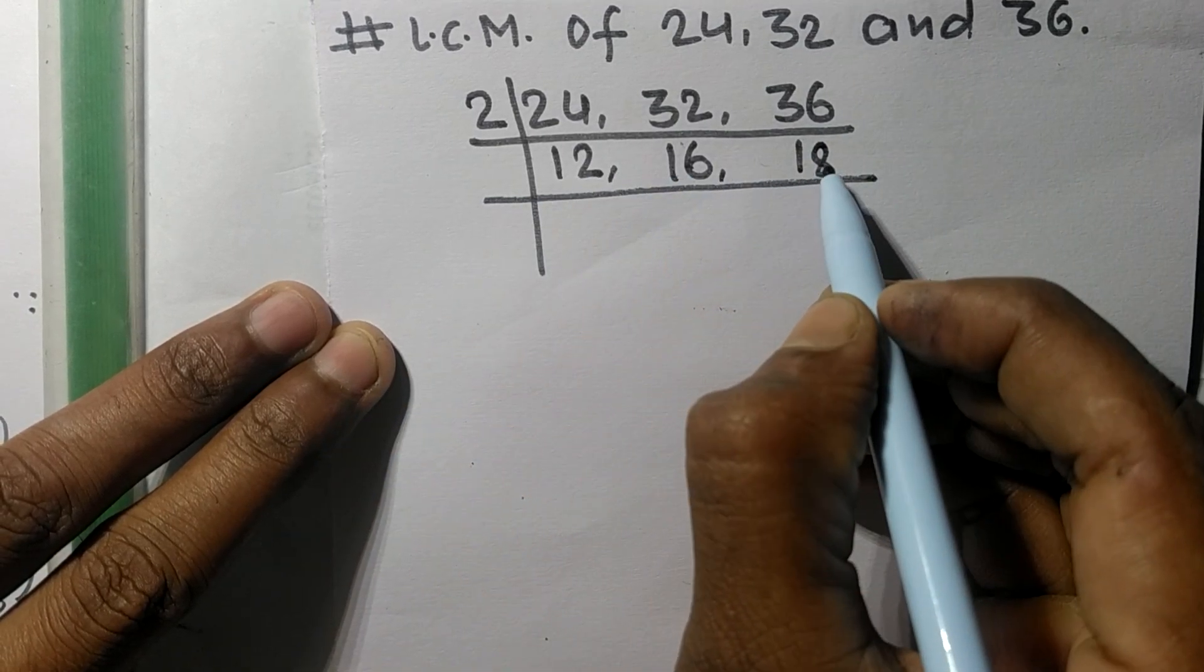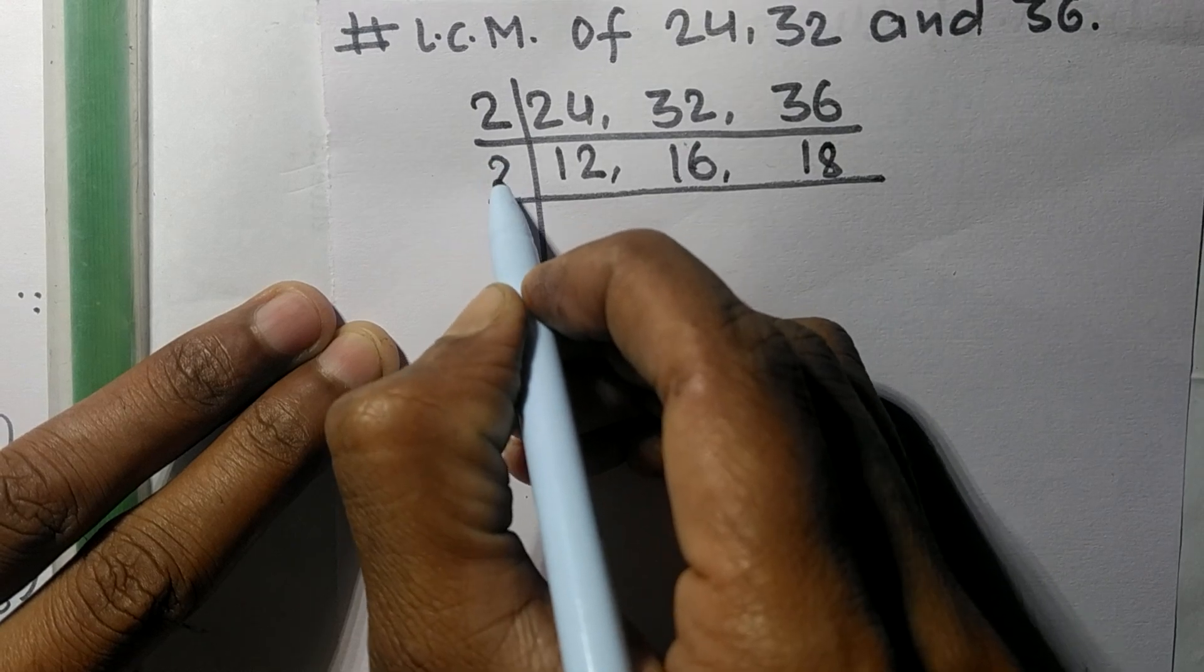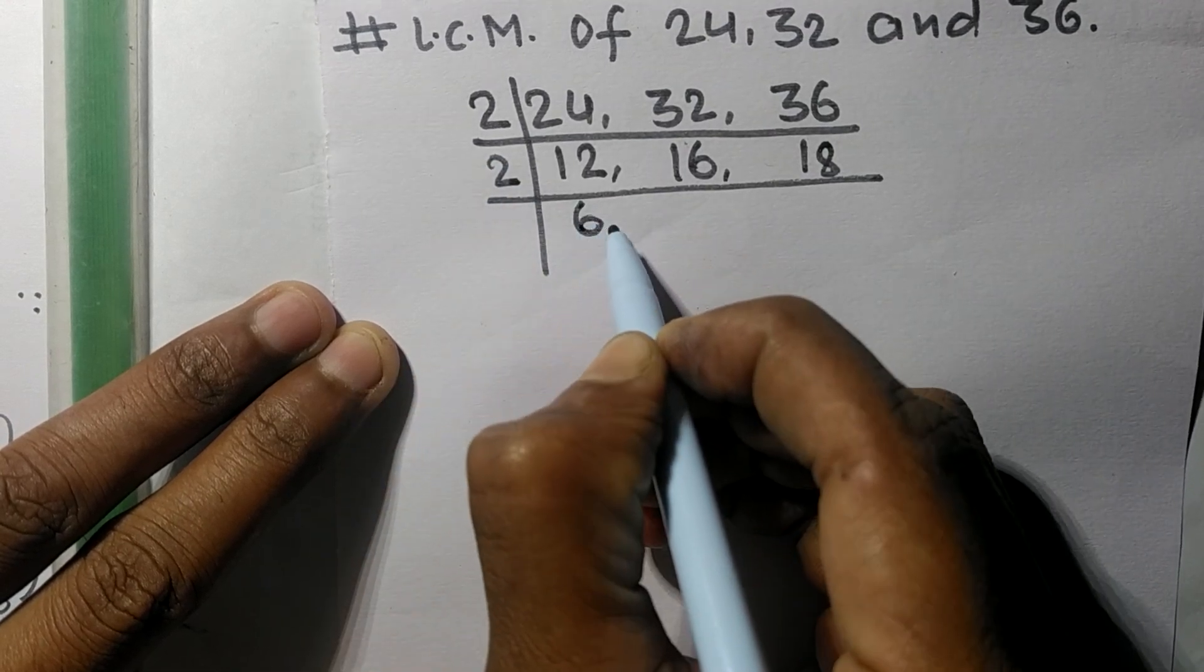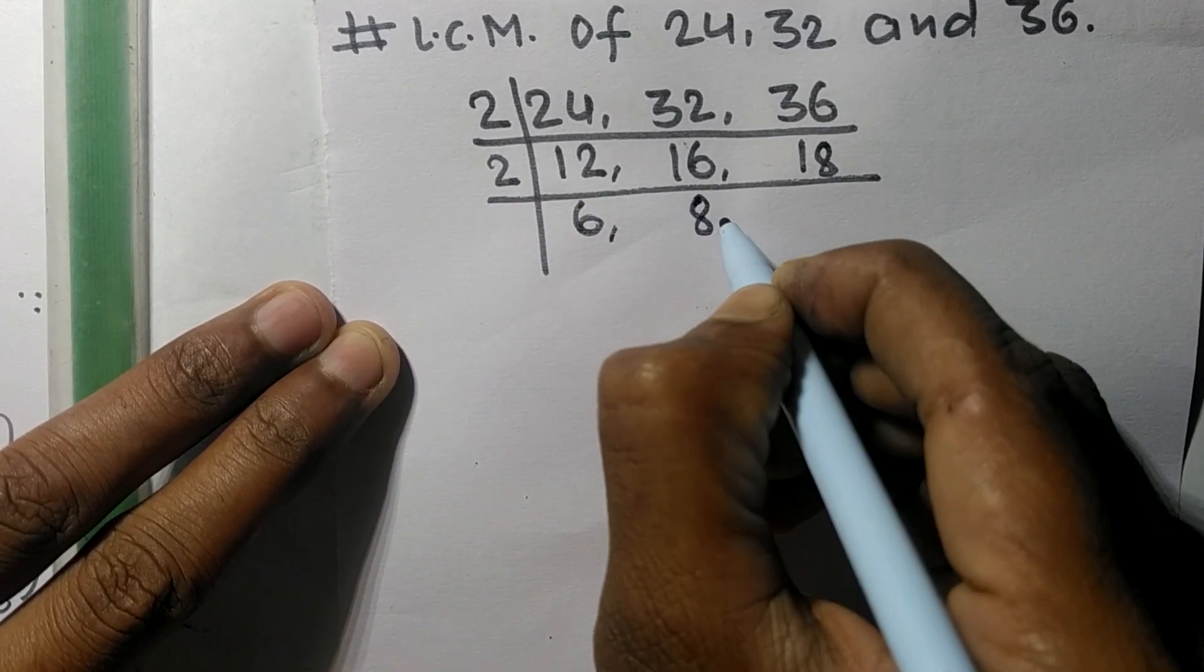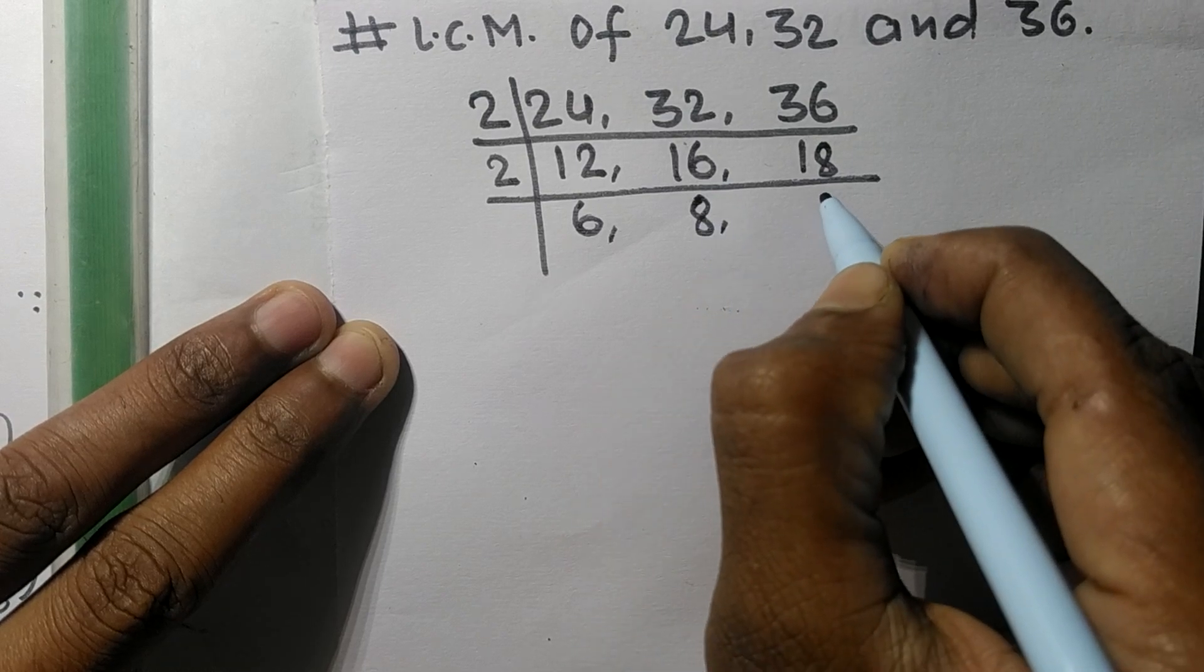2 times 6 means 12, 2 times 8 means 16, 2 times 9 means 18. So now again the 6 and 8 are divisible by 2.